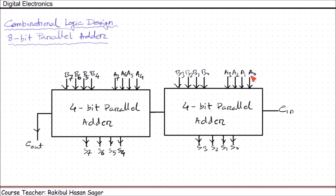We have 8-bit data in each variable: A0, A1, A2, A3, A4, A5, A6, A7 and B0, B1, B2, B3, B4, B5, B6, B7. After adding A3 and B3, the carry out from the first 4-bit adder acts as carry in for A4, B4 in the second adder. In this way it performs parallel addition, and finally we get S0 through S7 and Cout as the summation output.